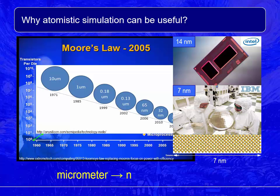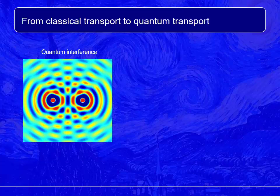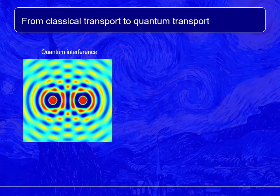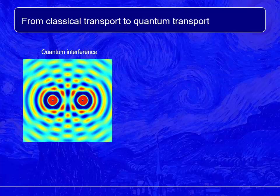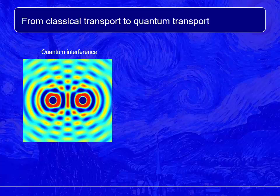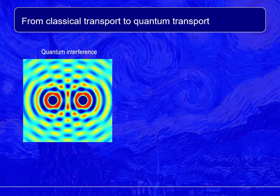A 7 nanometer silicon channel is about 50 atomic layers and these devices are truly atomic. It is clear that the trend has moved from micrometer to nanometer all the way to the atomic scale. We have to realize that the continuous reduction in transistor size may result in a discontinuous change in the underlying physics.